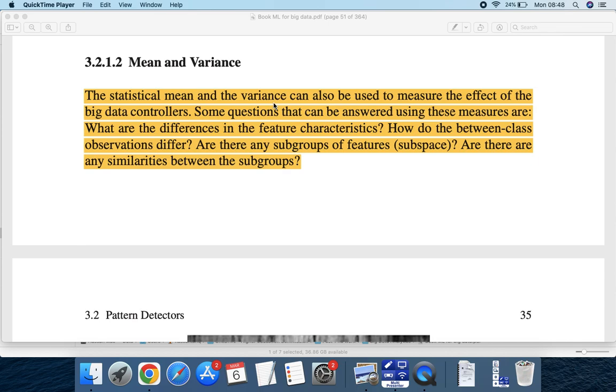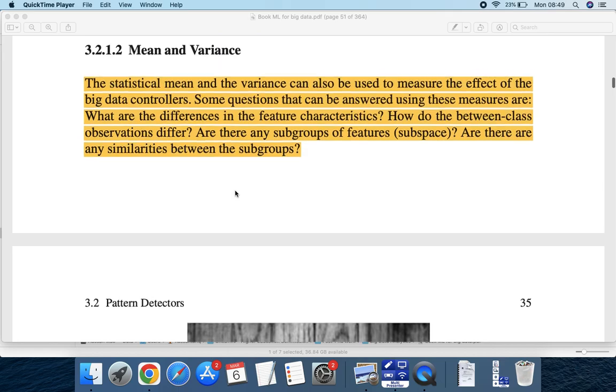Variance is actually how - for example, if you have a mean of five in a particular data set, variance is how far the data points can go from five on both sides. It is normally written as plus minus. So how far they can - plus minus two or plus minus three or whatever. So this is the variance. How much of your data vary between your mean. So this is mean and variance.